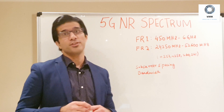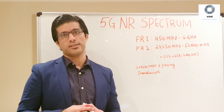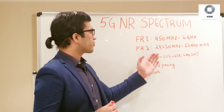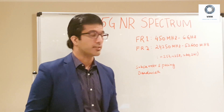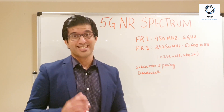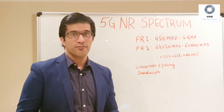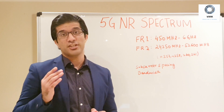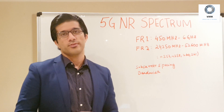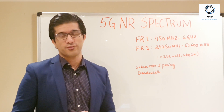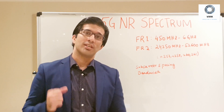FR2 basically refers to millimeter wave, which is a very high frequency range. It starts from 24.25 GHz and ends at 52.6 GHz. This is a new frequency range being introduced in 5G and it provides maximum capacity and maximum throughput.